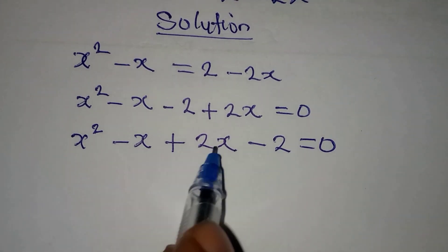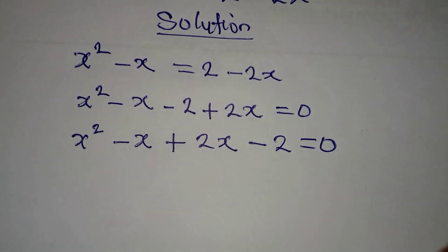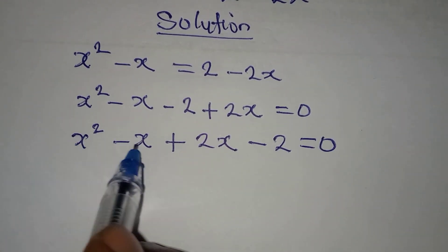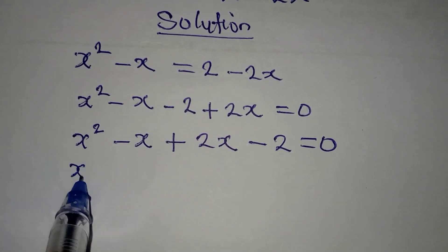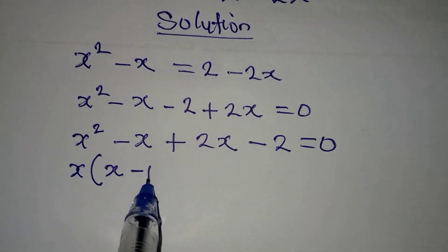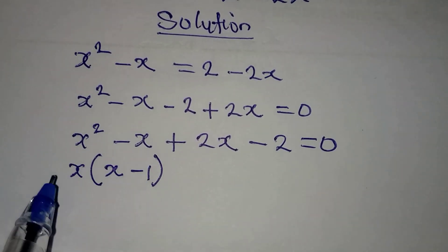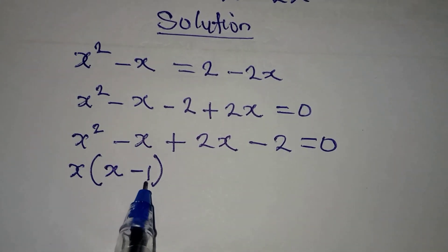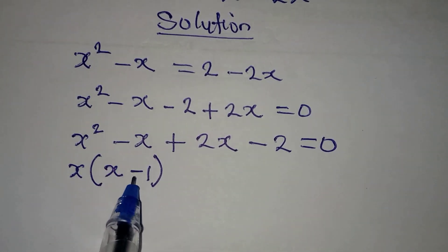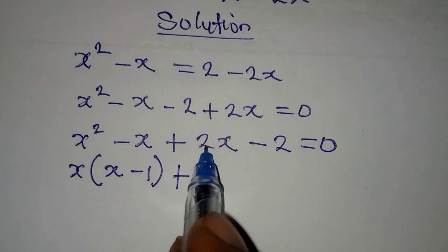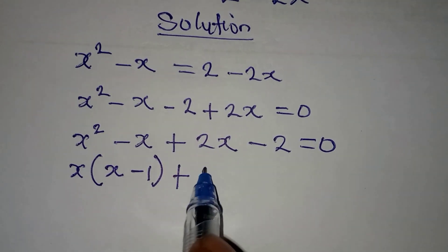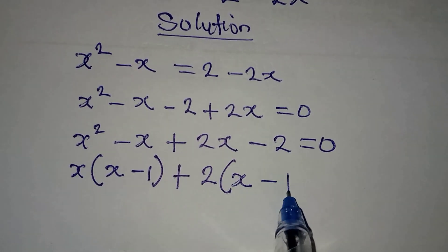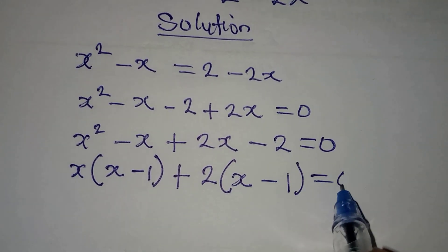Without adding the middle terms, we can simply factorize. These first two terms have x in common, so we have x times (x minus 1). If you factor out x, 1x will be left over, and x into x will give us x squared. This negative is here. Then plus 2 is here, so I bring it out. Here we have 1x, then 2 divided by 2 is 1, and this will be equal to 0.